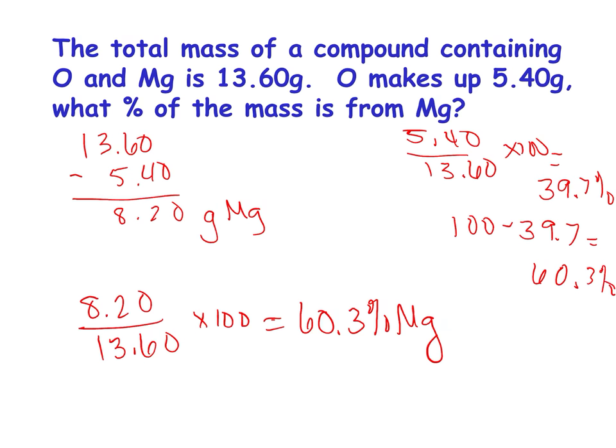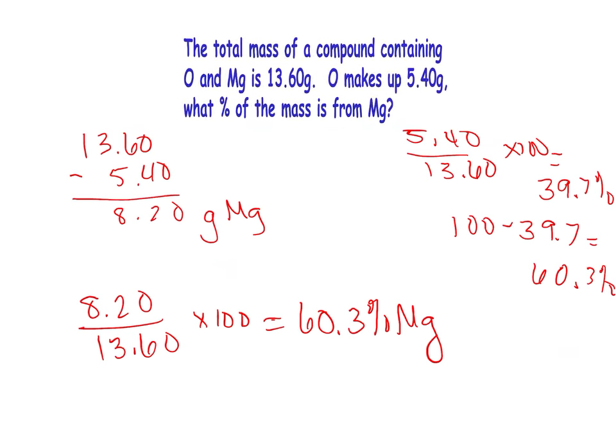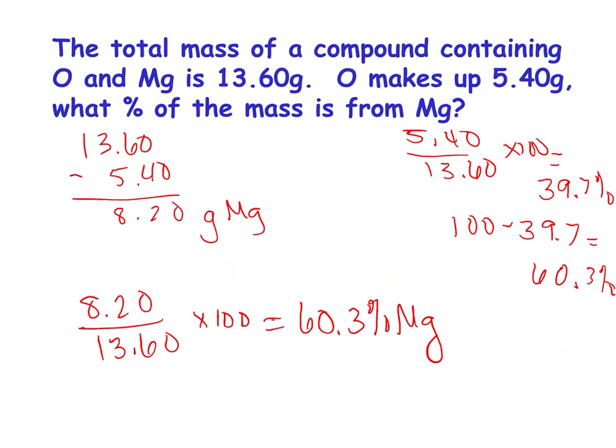And you get 60.3. So either way is fine. You could either subtract and get that, or you can just subtract from 100 at the end. Either way is fine. So if they don't give you lab data, for example, they only give you formulas, you have to use GFMs, which is a gram formula mass from periodic table. If they do give you lab data, you need to use it.